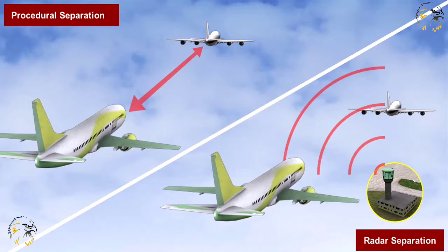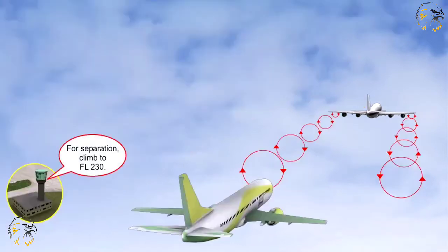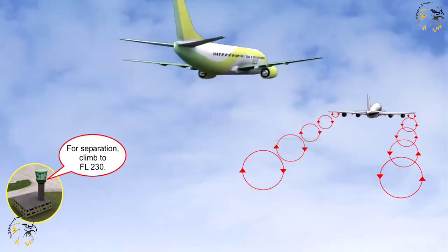Remember, separation comes in two basic forms: radar separation or procedural separation. Whenever the type of separation or minimum used to separate two aircraft cannot be maintained, or becomes insufficient to maintain safety, action shall be taken to ensure that a form of separation is implemented, such as vertical, horizontal, or a combination of the two, that continues to ensure the safety of the aircraft.